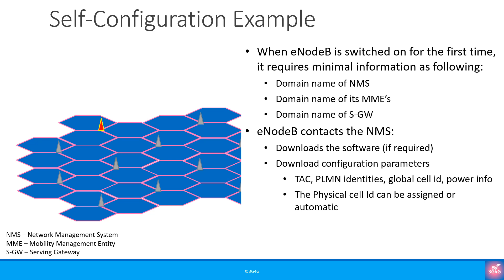The eNodeB then contacts the NMS and downloads the software if required. It also downloads configuration parameters like tracking area code or TAC, PLMN identities, global cell ID, power information, etc. The physical cell ID can then be assigned or it could be automatic.